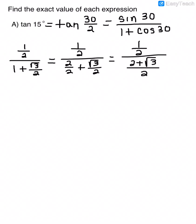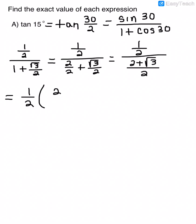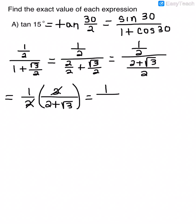This is a fraction divided by a fraction. To divide a fraction by a fraction we multiply by its reciprocal. So this is the same as 1/2 times 2/(2 + √3). When we multiply, the 2's divide out and I'm left with 1/(2 + √3).